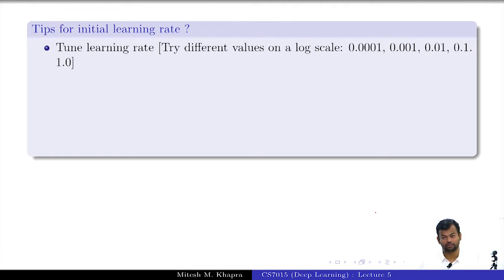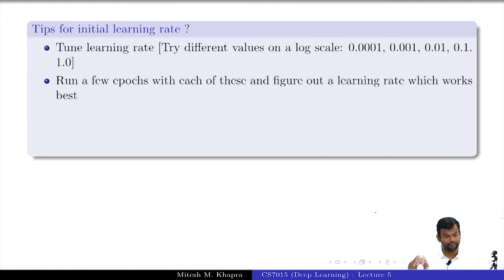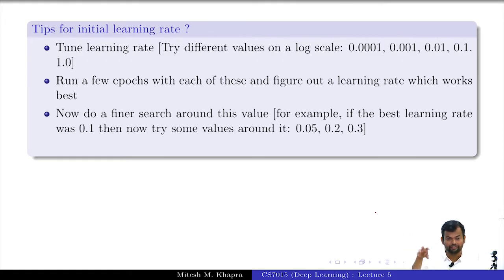I started off with a log scale. Now run it for a few epochs, figure out which of these learning rates on the log scale works well. Now do a finer search around the best learning rate that you discovered. Say 0.1 was the best on the log scale. So now look at 0.2, 0.3, 0.4, 0.5, look at values around it and see which one works better. This is how you will tune the hyperparameters.